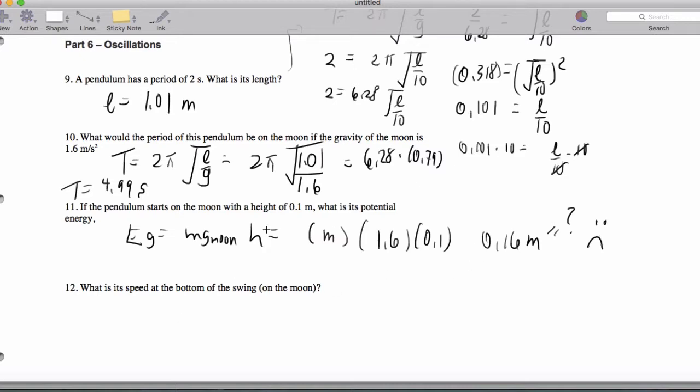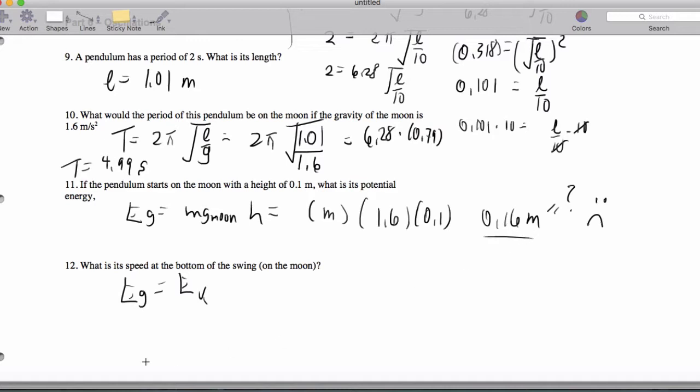But we can get the speed at the bottom of the swing because we can say Eg equals Ek. So we can actually say this number here. I'll actually use it. I'll say 0.16 times m equals 1/2 mv squared.